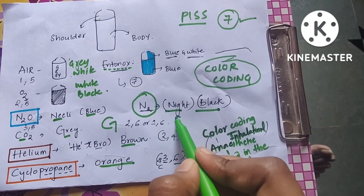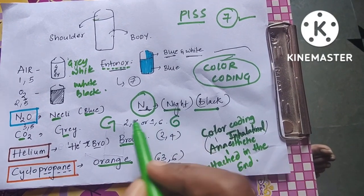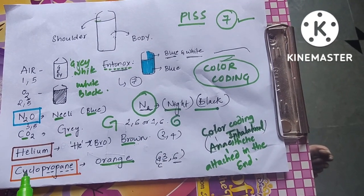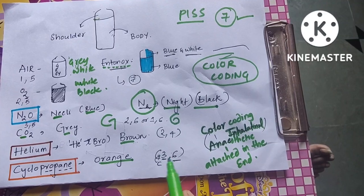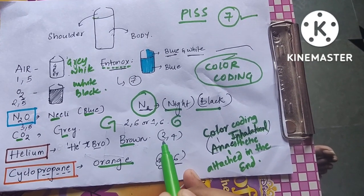Similarly, cyclopropane - you can make six out of C and C is the third letter - so 3,6 is cyclopropane. Helium is 2,4. For Entonox it is 7. These are the pin index systems you need to remember.